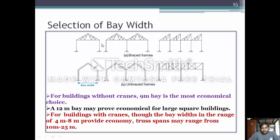Next is the selection of bay width. Bays are either braced frame or unbraced frame. For buildings without cranes, a 9-meter bay is the most economical choice. A 12-meter bay may be economical for large square buildings. For buildings with cranes, bays in the range of 4 m to 8 m provide economy. Truss spans may range from 10 to 25 meters.